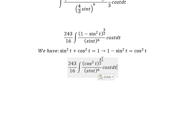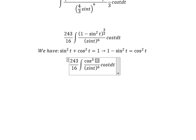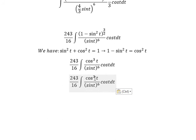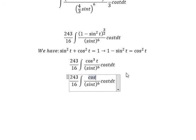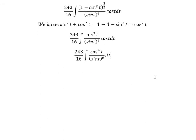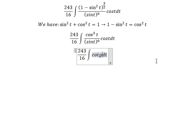Now for the next step, you will get cosine t to the power of 3. Cosine t multiplied with this gives about cosine t to the power of 4. Next we have cosine t to the power of 4 over sine t to the power of 6. We can put cosine t to the power of 4 together.